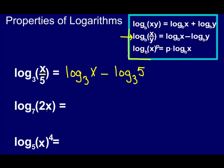Let's look at the next one. I'm multiplying, so that's going to be log base 7 of the first number, which is 2, plus — because remember, when we multiply, we add — log base 7 of X. The base part is really important to include, because if you don't put a base in there, we assume it's 10.